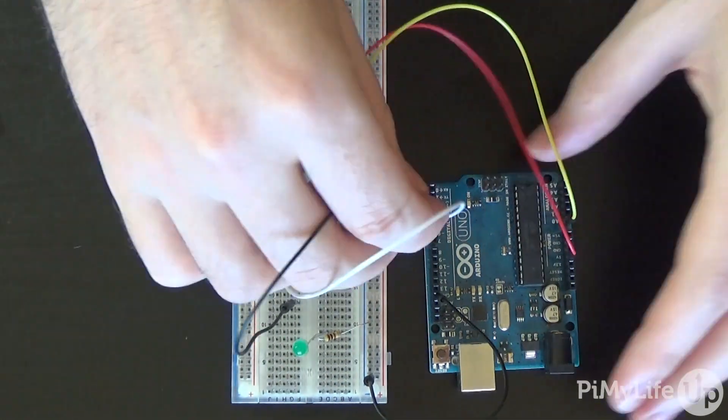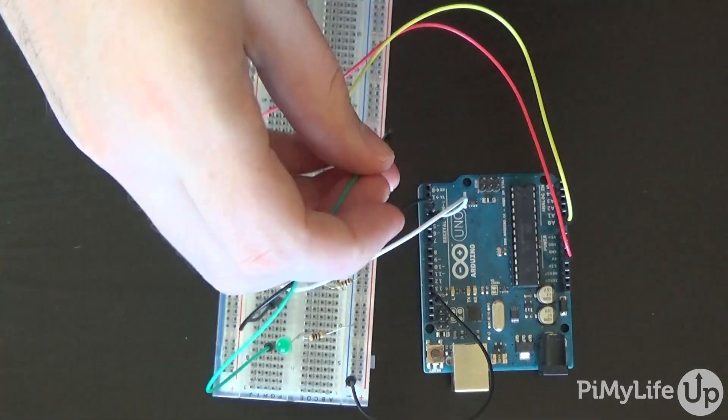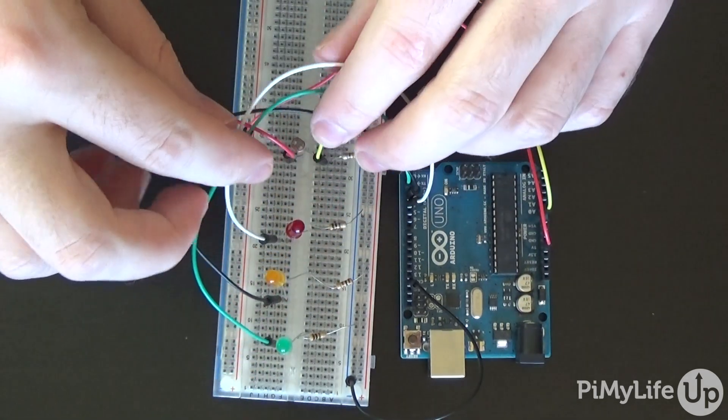Now place a wire that goes back to the Arduino for each of the LEDs. Red goes to pin 4, yellow goes to pin 3, and finally green to pin 2. Now we're ready to turn it on and deploy the code.